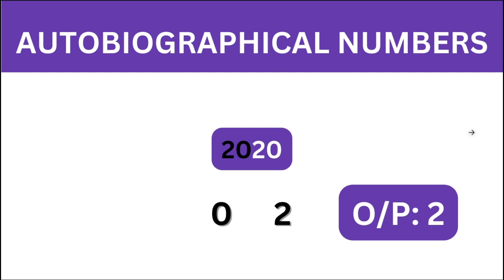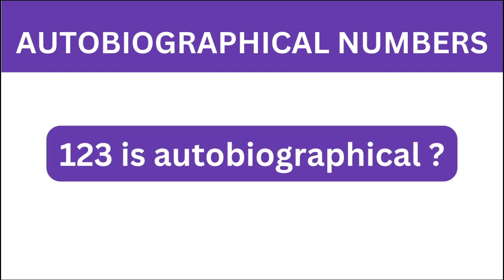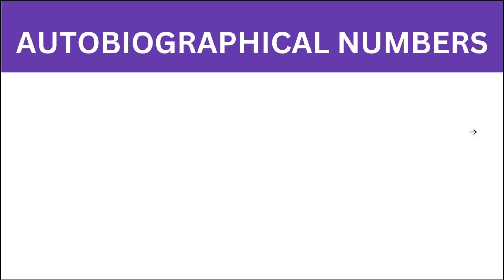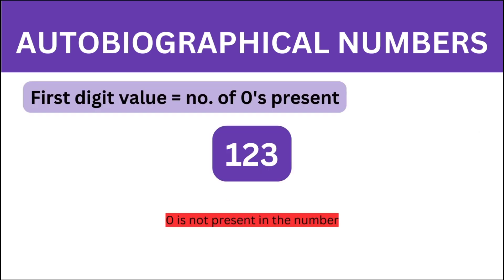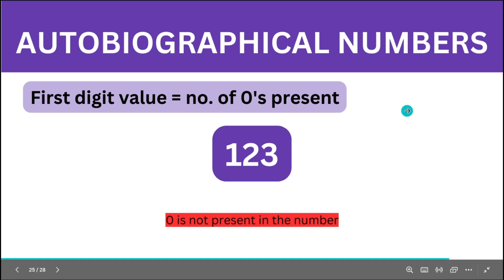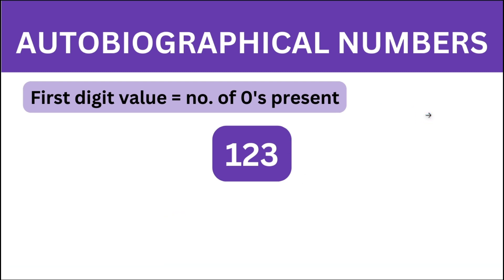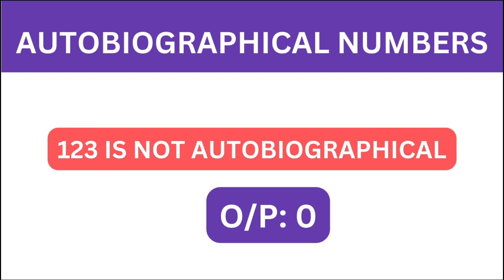Now let's see an example where the number is not autobiographical. Consider the number 123. The first digit is 1, meaning there should be a single 0 present, which is not true since there is no 0 in our number. Thus 123 is not autobiographical and therefore the answer is 0.